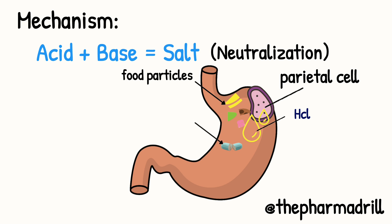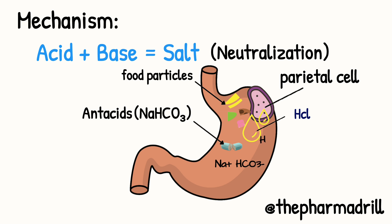When an antacid like NaHCO3, or sodium bicarbonate, is taken to relieve acidity, it disintegrates into Na+ and HCO3-, that is sodium and bicarbonate. The H+ from HCl then binds with bicarbonate, that is HCO3-, to form carbonic acid, that is H2CO3. This carbonic acid further disintegrates into water, H2O, and carbon dioxide, CO2.